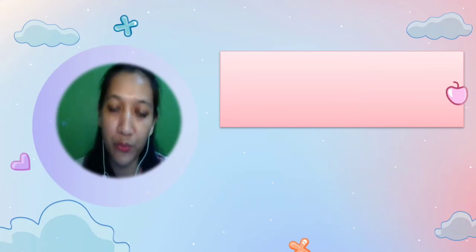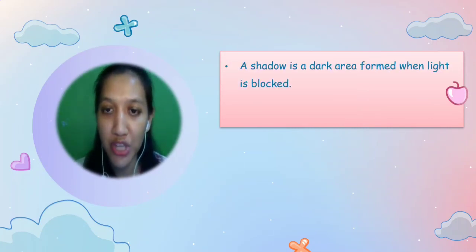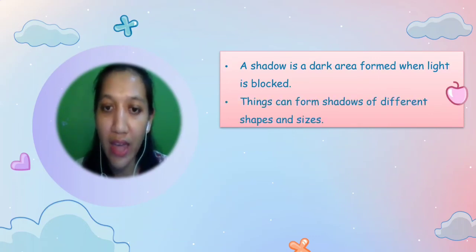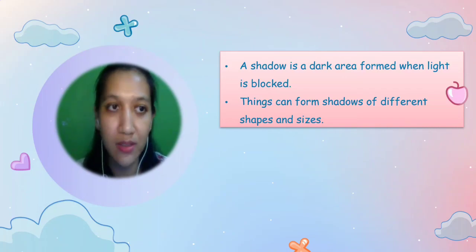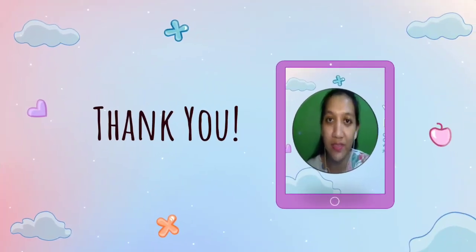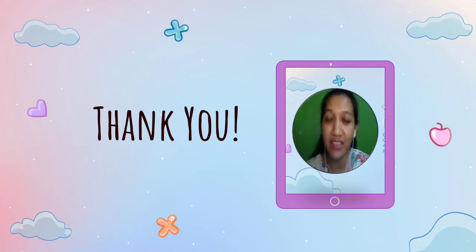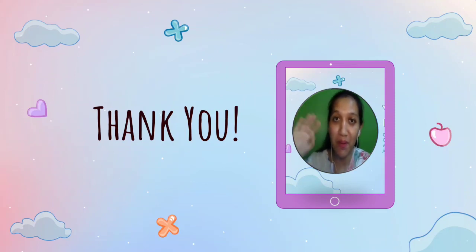Let's recap what we have learned. First, a shadow is a dark area formed when light is blocked. And things can form shadows of different shapes and sizes. This is the end of our lesson. Thank you for watching until the end. Be happy, stay healthy, see you on the next lesson. Bye!